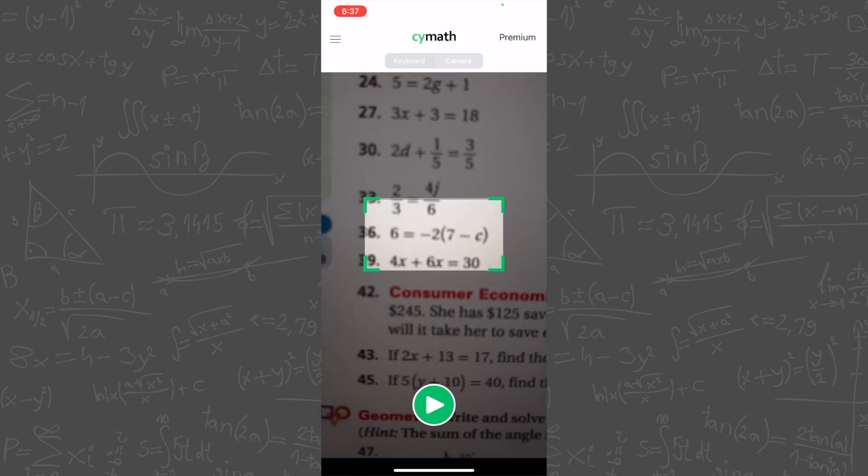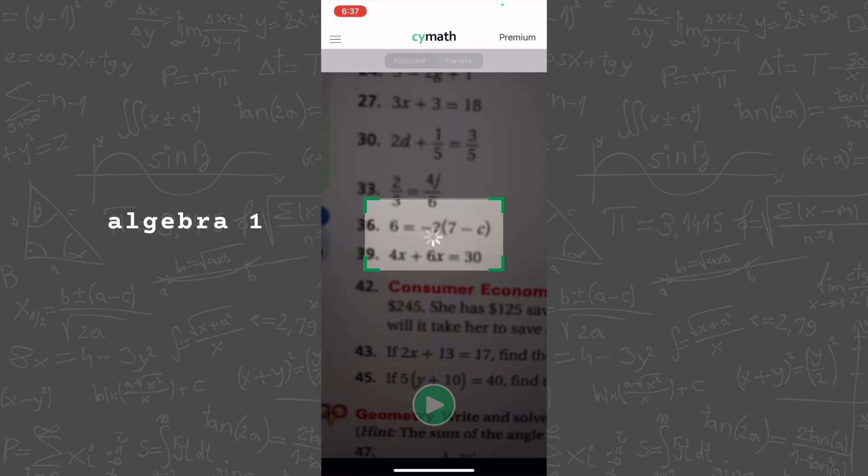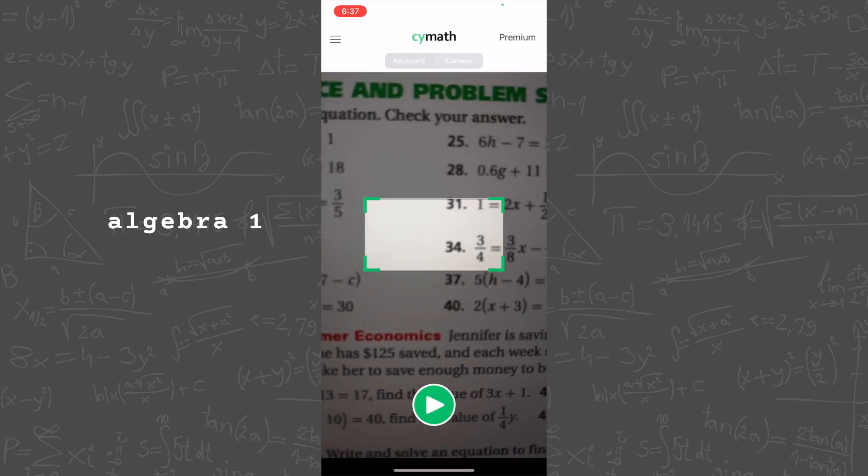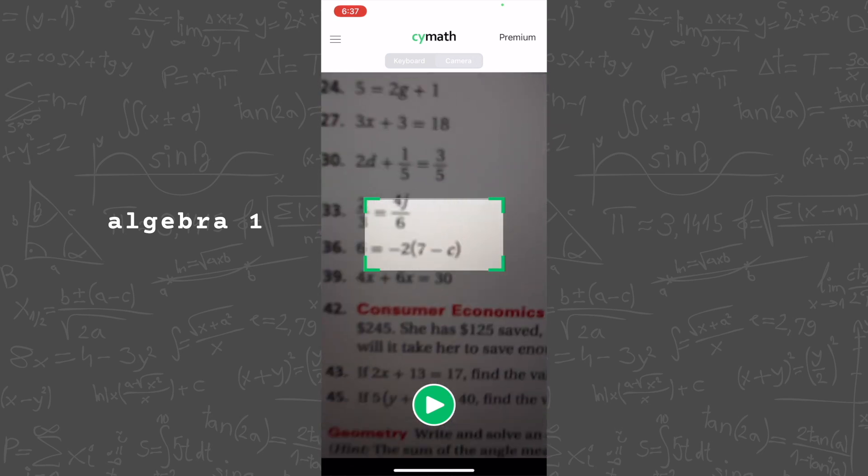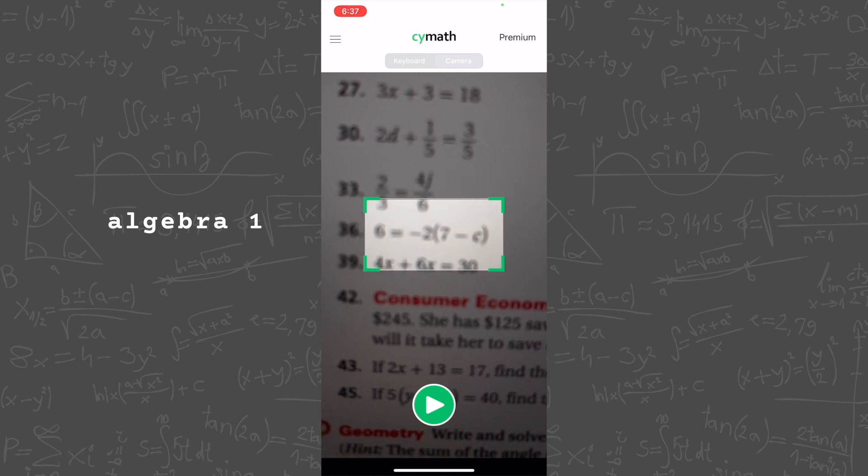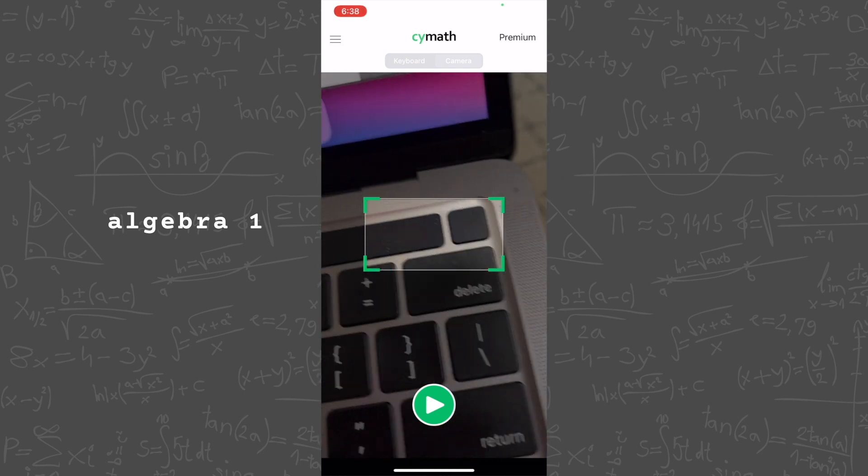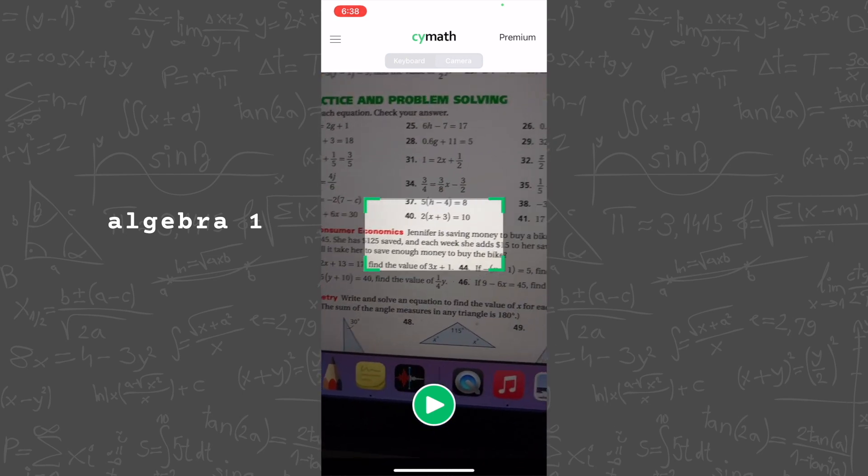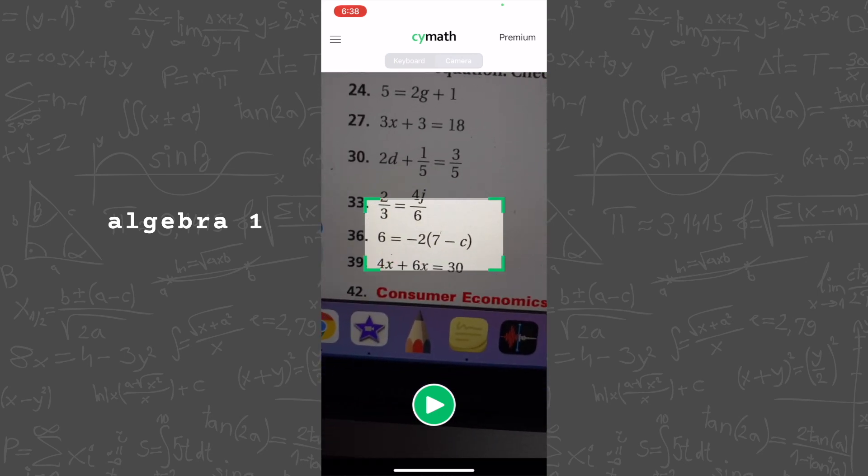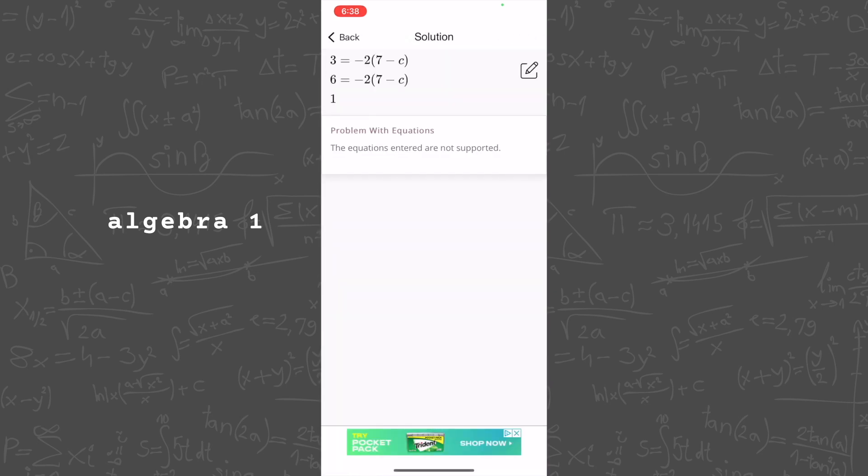I first tried an Algebra 1 linear equation problem where you're trying to solve for x, and something I noticed right away was that I had a hard time getting it to focus and scan the problem I wanted. The camera worked, but you're supposed to reshape this box to highlight the problem you're looking at, but I couldn't get the box skinny enough just to scan this one problem. It kept picking up the problem above it and below it, so I ended up having to zoom in on the PDF just so the problem would take up the whole box. I'm just wondering what would have happened if I had a physical textbook and I can't zoom in on a paper textbook.